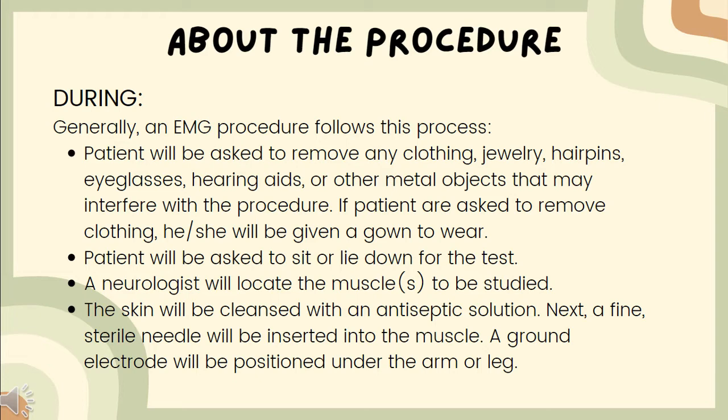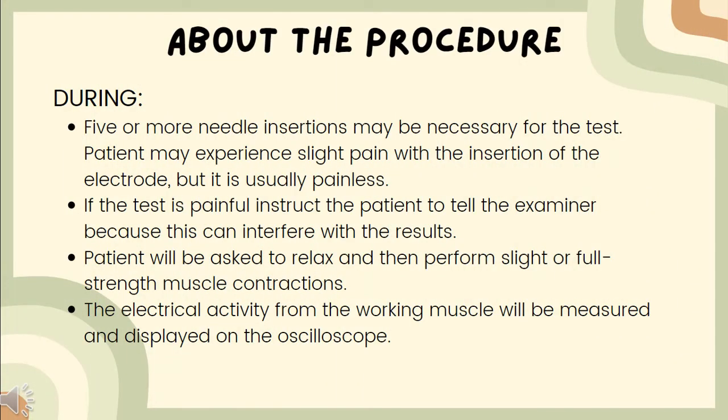Second, the patient will be asked to sit or lie down for the test. A neurologist will locate the muscle or muscles to be studied. The skin will be cleansed with an antiseptic solution. Next, a fine sterile needle will be inserted into the muscle, and a ground electrode will be positioned under the arm or leg. Five or more needle insertions may be necessary. The patient may experience slight pain with the insertion of the electrode, but it is usually painless. If the test is painful, the patient should tell the examiner as this can interfere with the results.